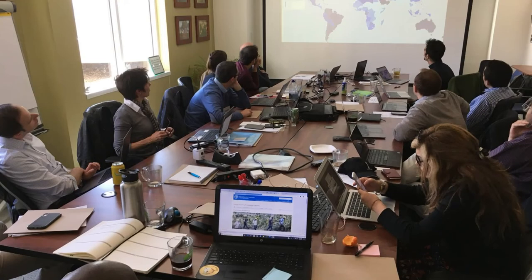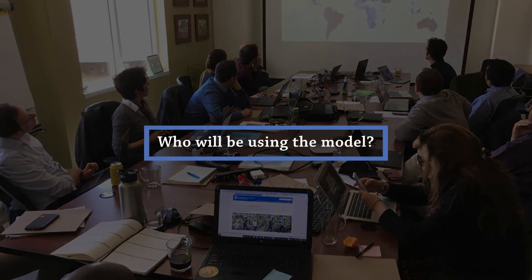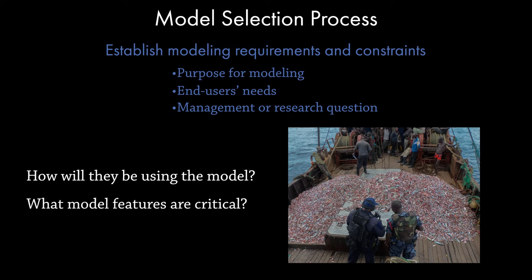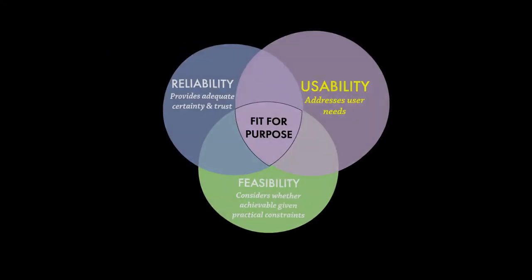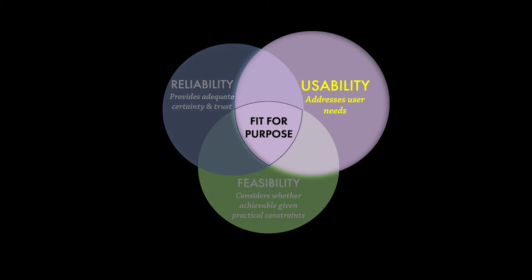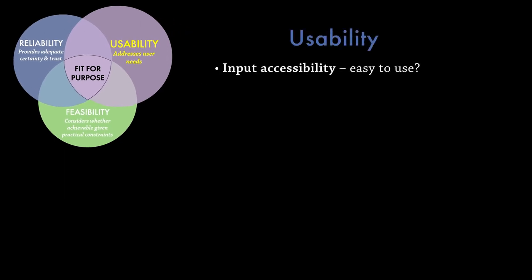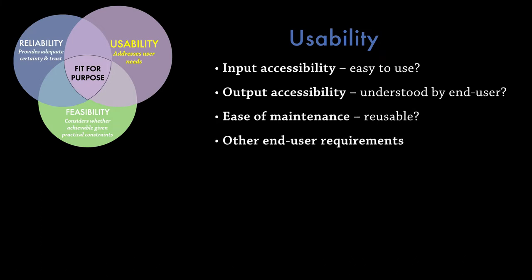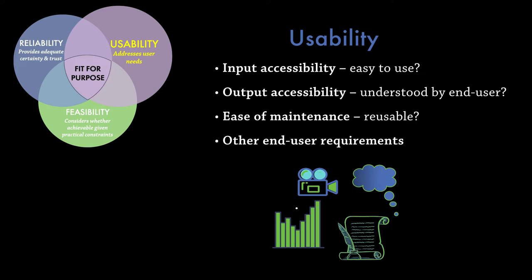When considering the end user needs, we also need to ask questions such as who will be using the model? When considering the question to be addressed, we ask how will they be using the model and what model features are critical to this? Input accessibility should be considered — that is, how easy it is for the target end user to run the model, including the effort needed to preprocess data as model input. Similarly, output accessibility is important: can the model results be understood and interpreted by the end user? For example, the end user may require certain types of data or models be used, or that certain management options be tested.